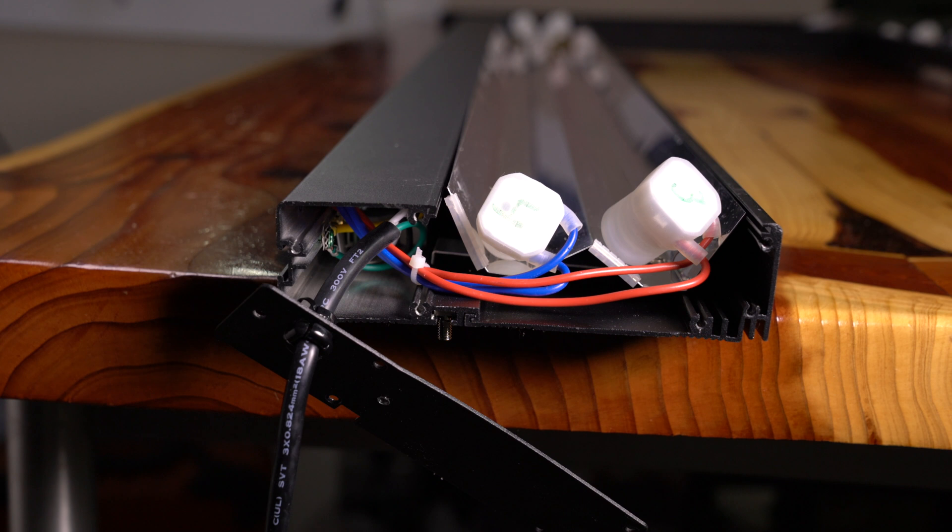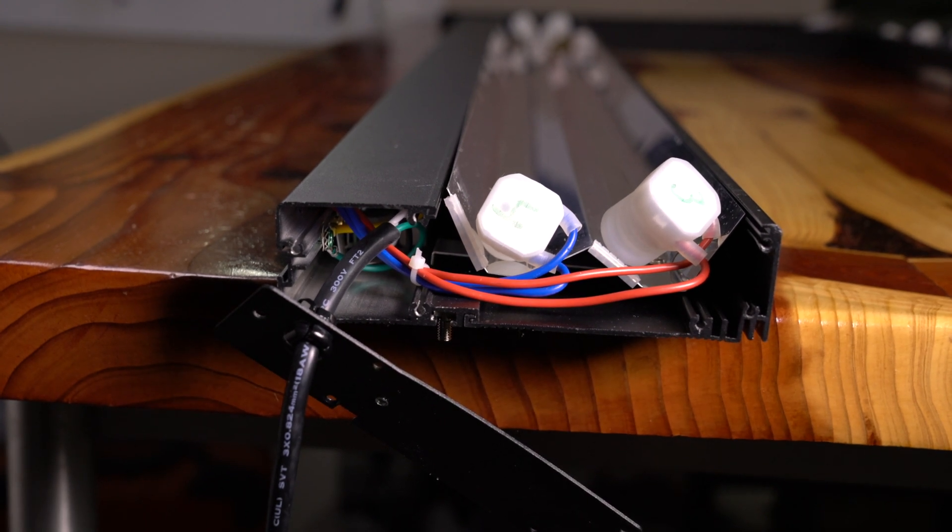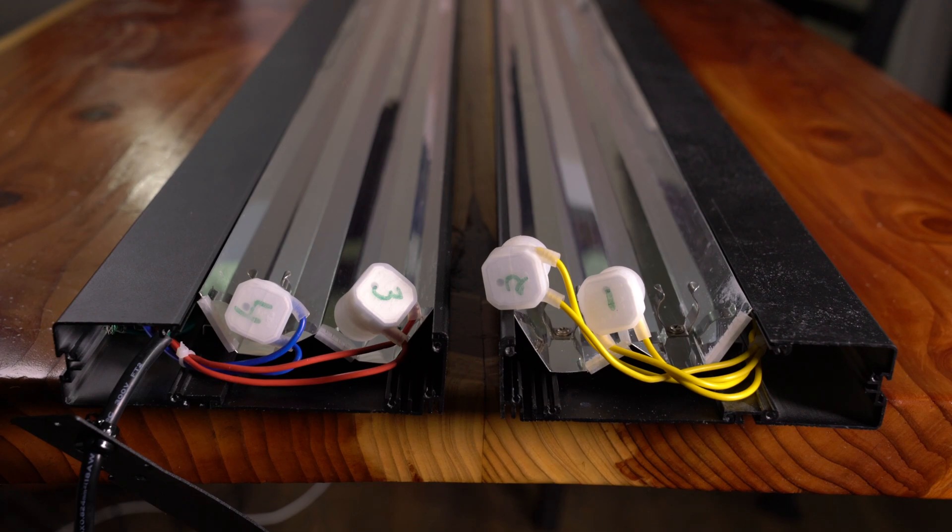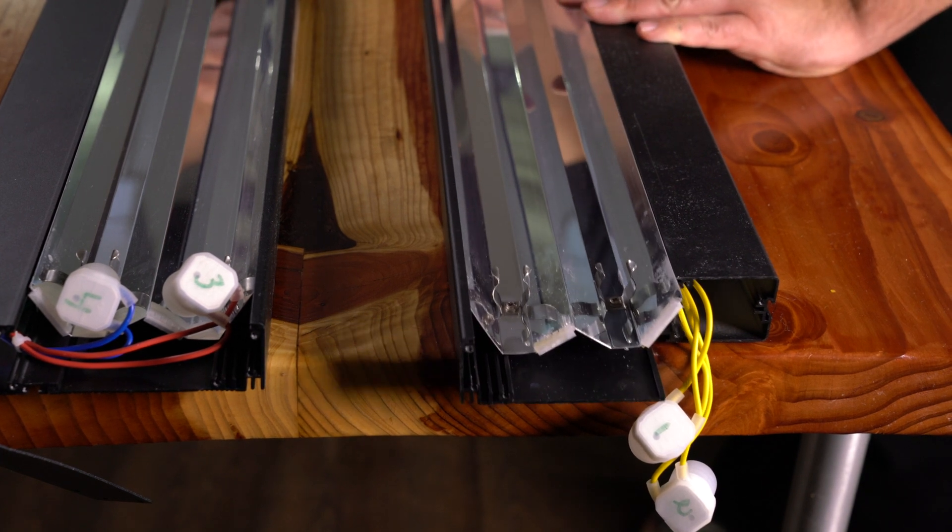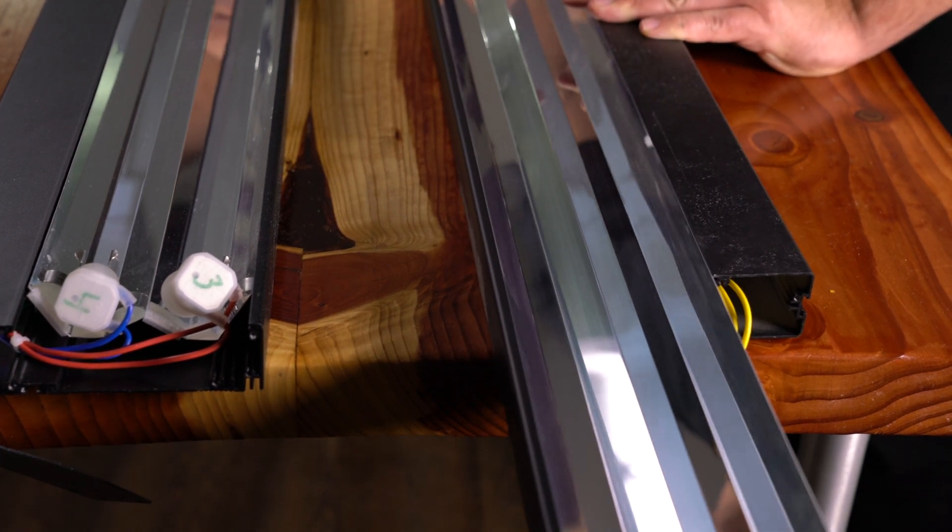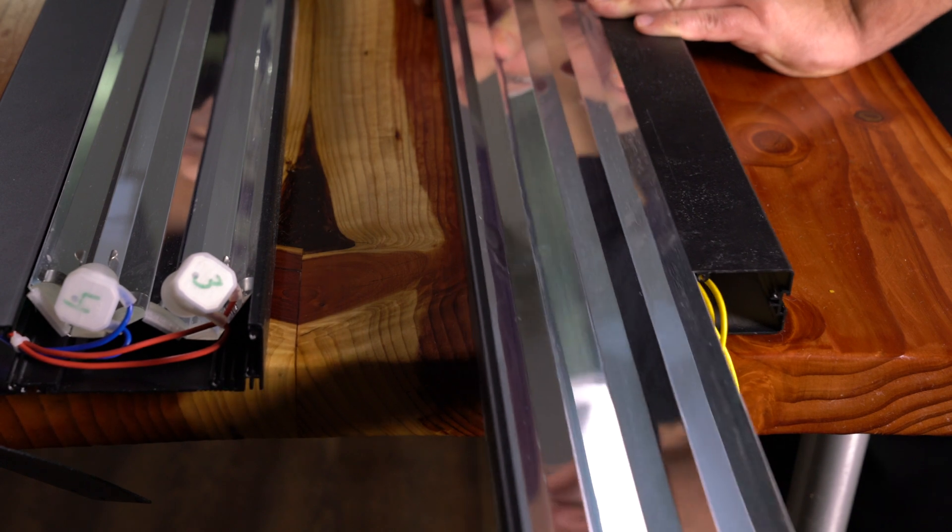With the end cap off we get our first look at the ballast wiring. Also note that if you have those silver screws in there to use for mounting the lights to the ceiling you're going to want to pull those out right now. So here's both fixtures side by side disassembled as far as the end caps are concerned. Now all you have to do is just slide out the fixture that holds the reflectors.